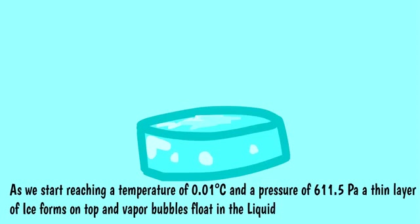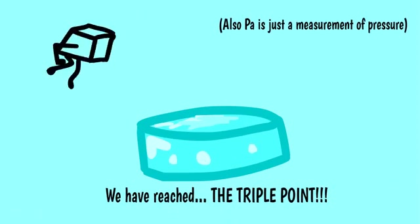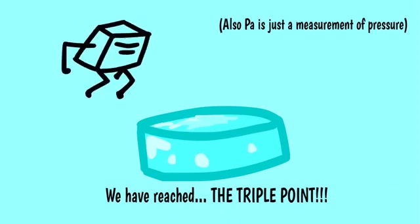As we start reaching a temperature of 0.01 degrees Celsius and a pressure of 611.5 Pa, a thin layer of ice forms on the top and vapor bubbles float in the liquid. We have reached the triple point. Also, Pa is just a measurement of pressure.